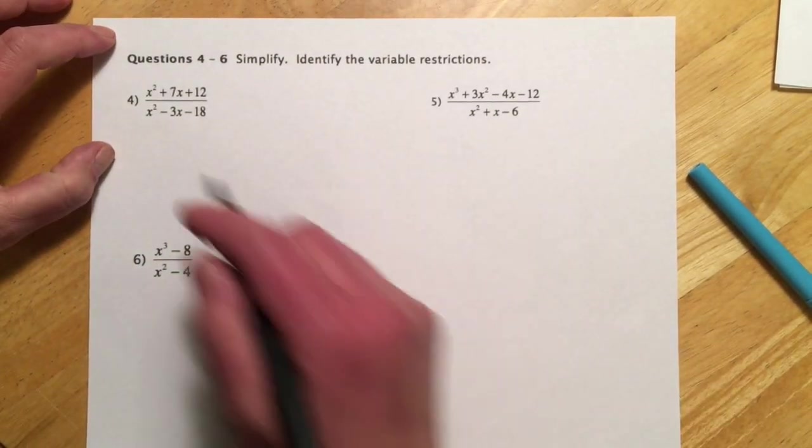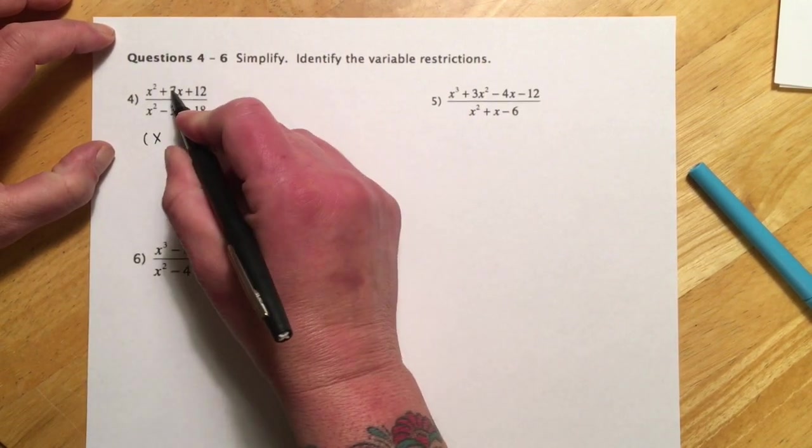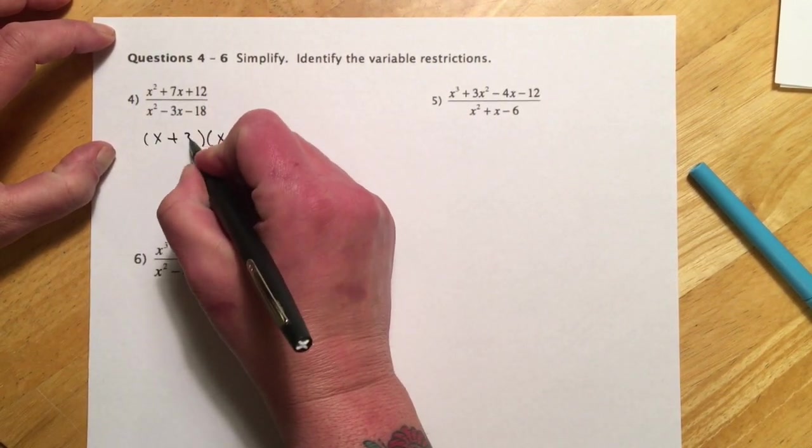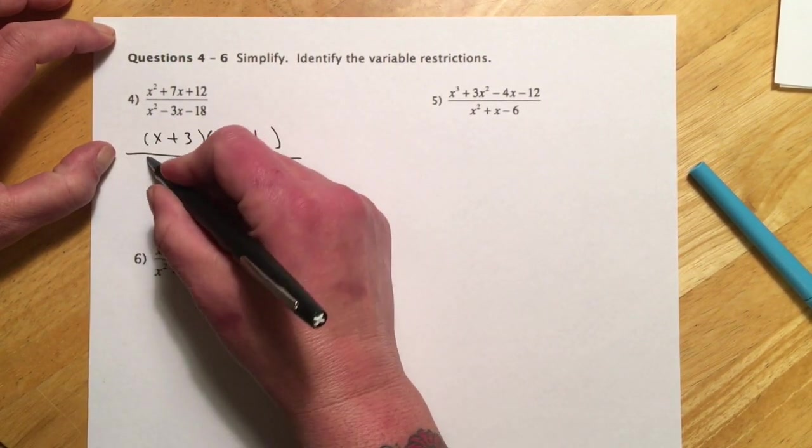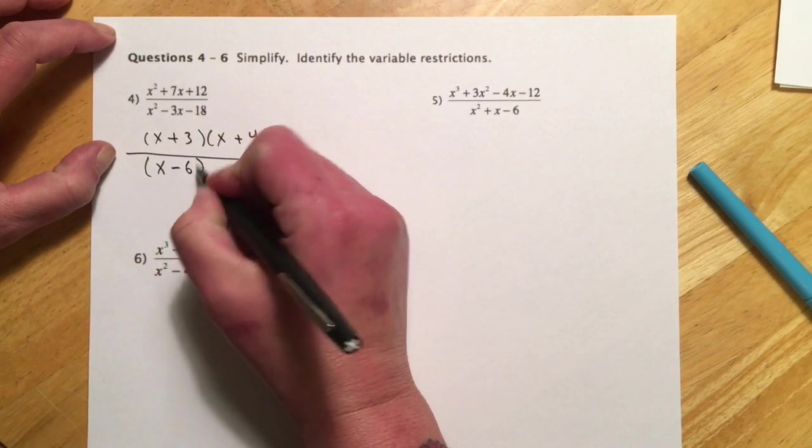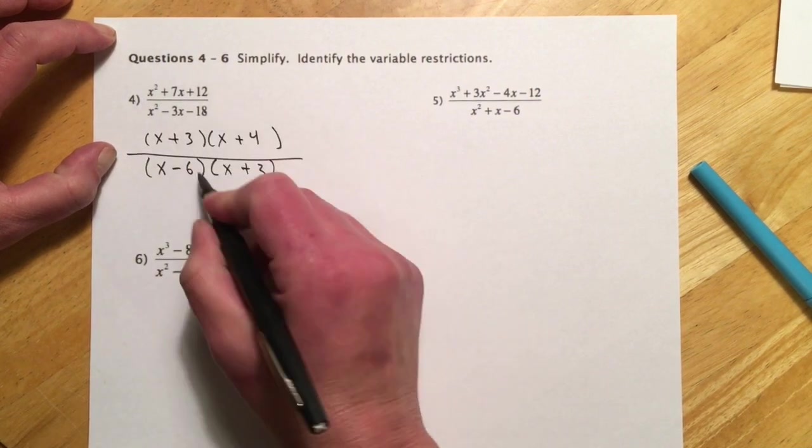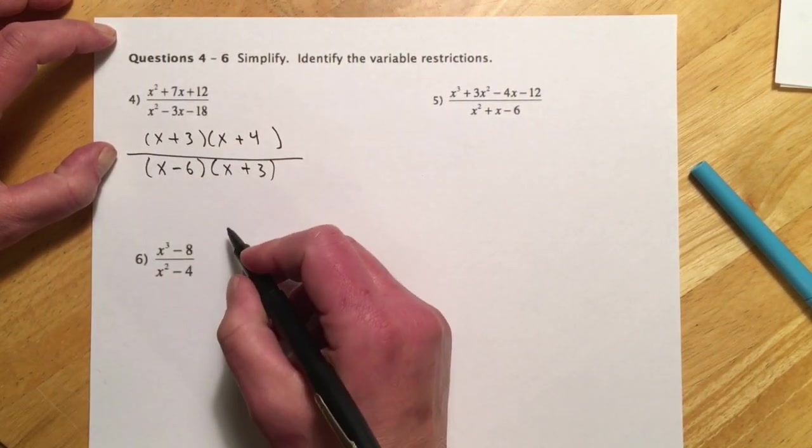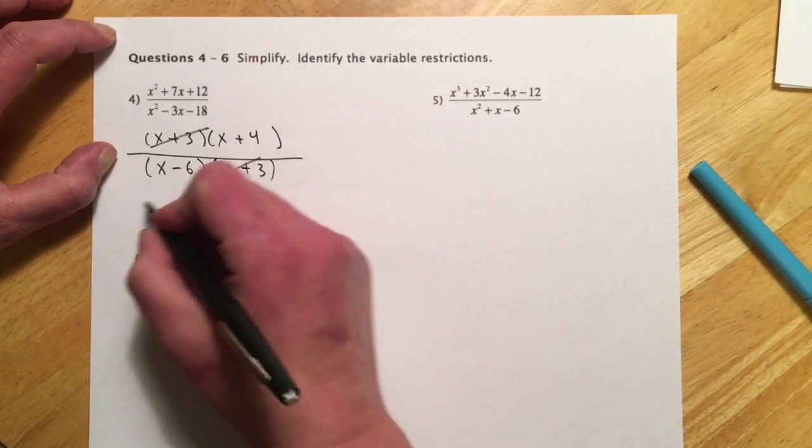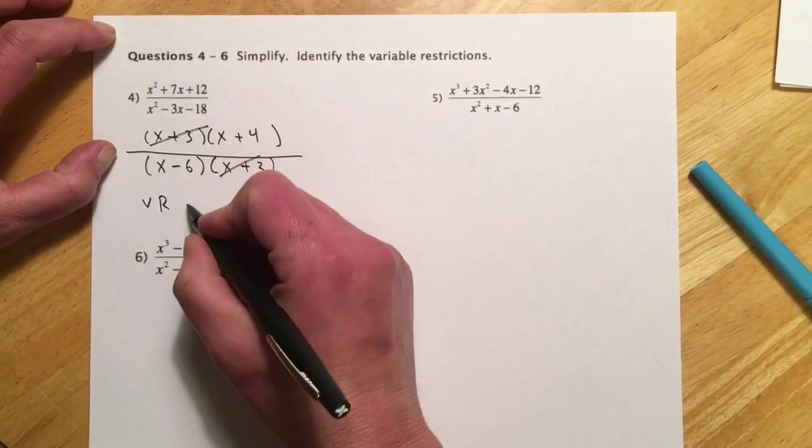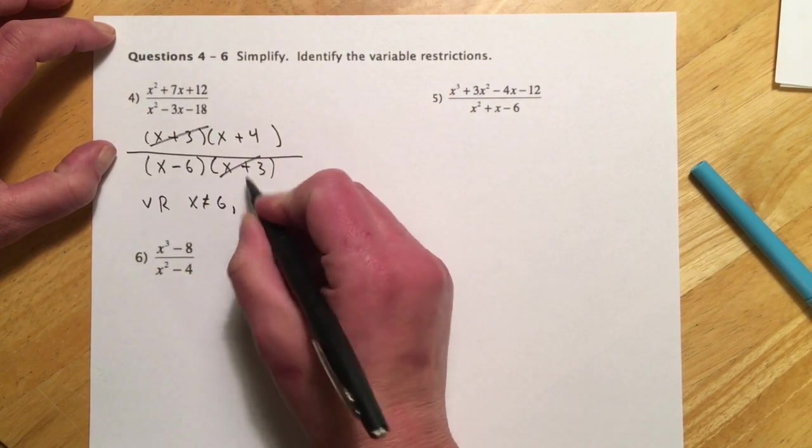These next are heavy trinomials. So this one we got our x's and then multiplies to 12 adds to be 7. So I'll be plus 3 and plus 4. For the 18 and negative 3, we're going to need an x minus 6 and an x plus 3. So multiplies to be 18, negative, and adds to be negative 3. So I can cancel those and then what's left would be my answer. Variable restrictions would be x can't be 6 or negative 3.